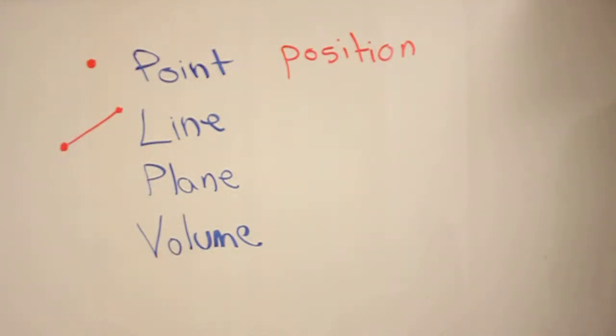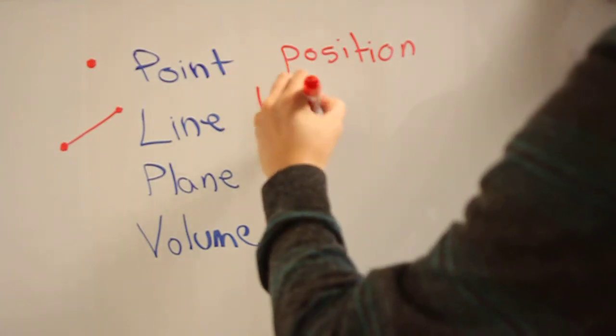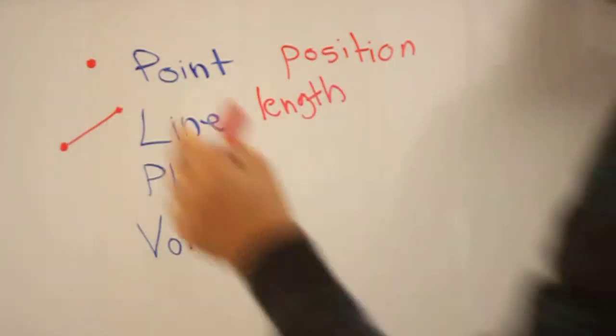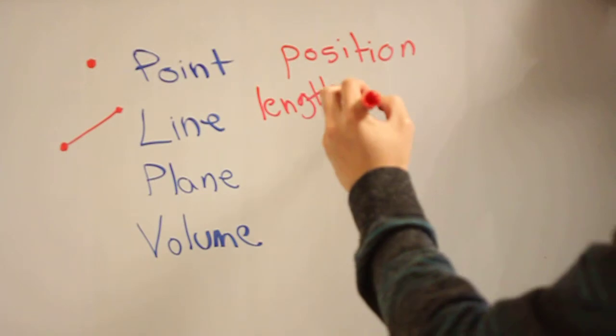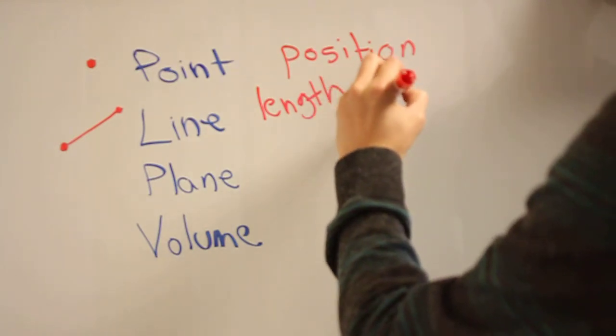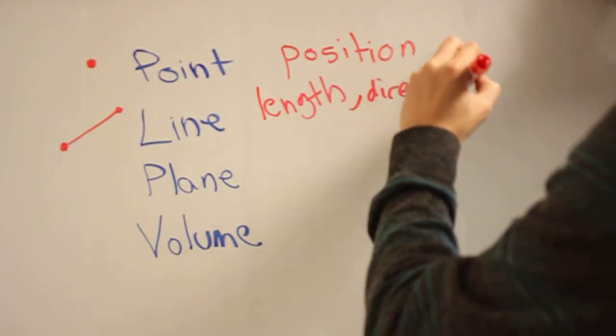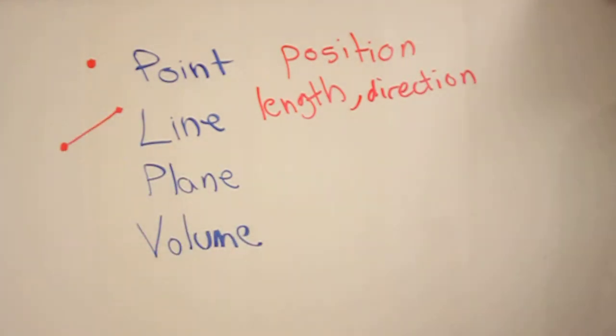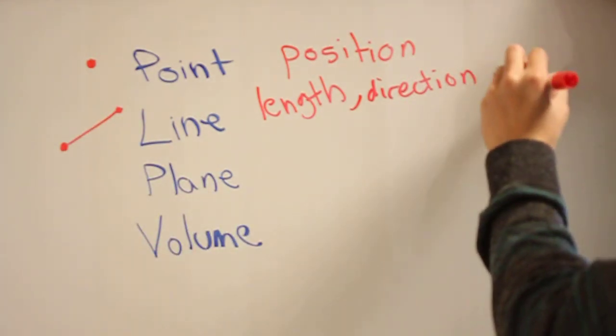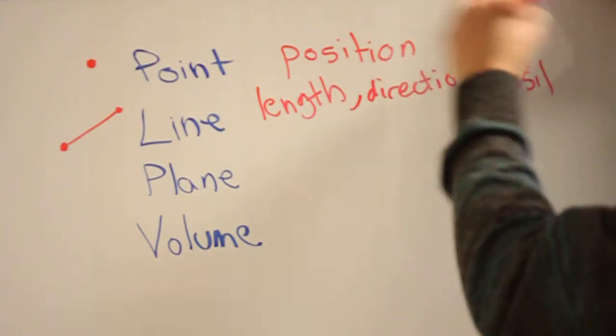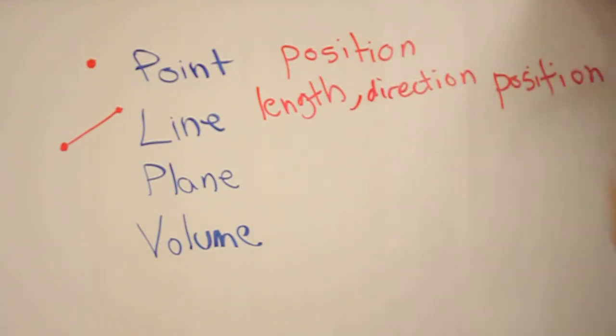A line has certain properties that a point doesn't have. It has length, described by the distance between the two points. It has direction, which is the axis by which the line rests. And it also has position, because those two points have position, which comes from the point's properties.